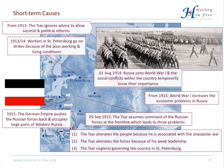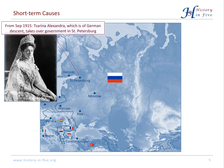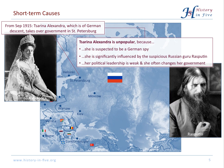The government was taken over by his wife, Tsarina Alexandra. There was a massive problem: she was of German descent, so she was suspected by many to be a German spy. Furthermore, she was under the influence of the mystic Rasputin, who by the way was murdered. And her political leadership was weak and she frequently changed the government.